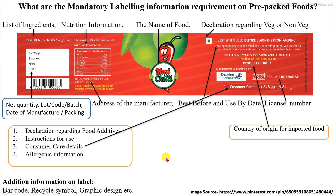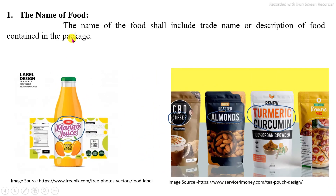Additional information as per need can include graphic design, recycling symbol, barcodes, and a proper declaration of the name of the product content on the package. The specific name or description of the food content in the package must be properly labeled on that packaged food. These are the examples.